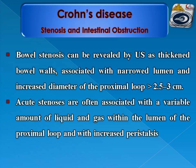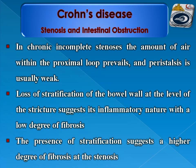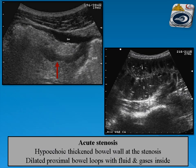Bowel stenosis can be revealed by ultrasound as thickened bowel wall associated with narrowed lumen and increased diameter of the proximal loops to more than 2.5–3 cm. Acute stenoses are often associated with a variable amount of liquid and debris within the lumen of proximal loops and with increased peristalsis. An example shows a hypoechoic strictured bowel segment with proximal dilatation of bowel loops containing air and fluid, with the hypoechoic nature denoting inflammatory nature with less degree of fibrosis.